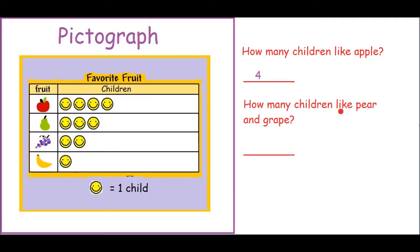Let's answer another question. How many children like pear and grapes? So let us look at the fruits — we have pear and we have grapes. The word AND tells us that we must add. Add the number of children who like pear and grapes. So let's count: one, two, three, count on, four, five. Five children like pear and grapes.